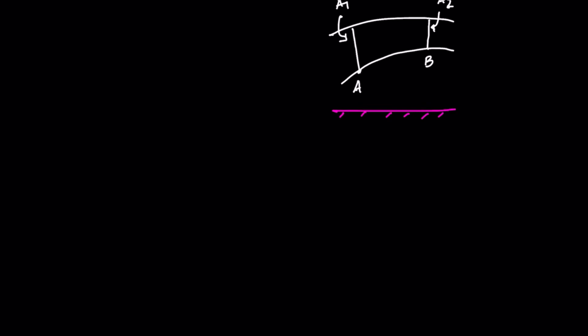The pressure is always inward, so the pressure at point A is P1 and the force on this face is P1·A1. Here the force at B is P2·A2, where P2 is the pressure at point B. Cross-section A is at height H1 and cross-section B is at height H2 from the reference level — the pink line. The heights of A and B are different, which means they have different potential energies.